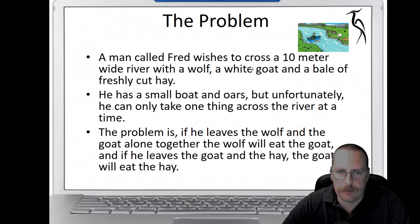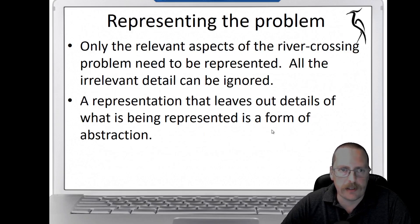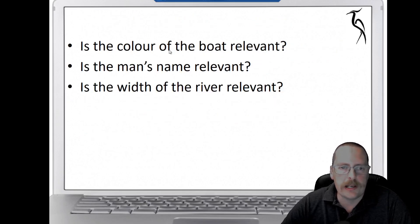The first stage of the problem is to work out what we need to know and what we don't need to know. Do we need to know what color the boat is? Well, that's irrelevant information. Do we need to know the man's name? We probably don't need to know his name. And the width of the river, it doesn't really matter how wide the river is.